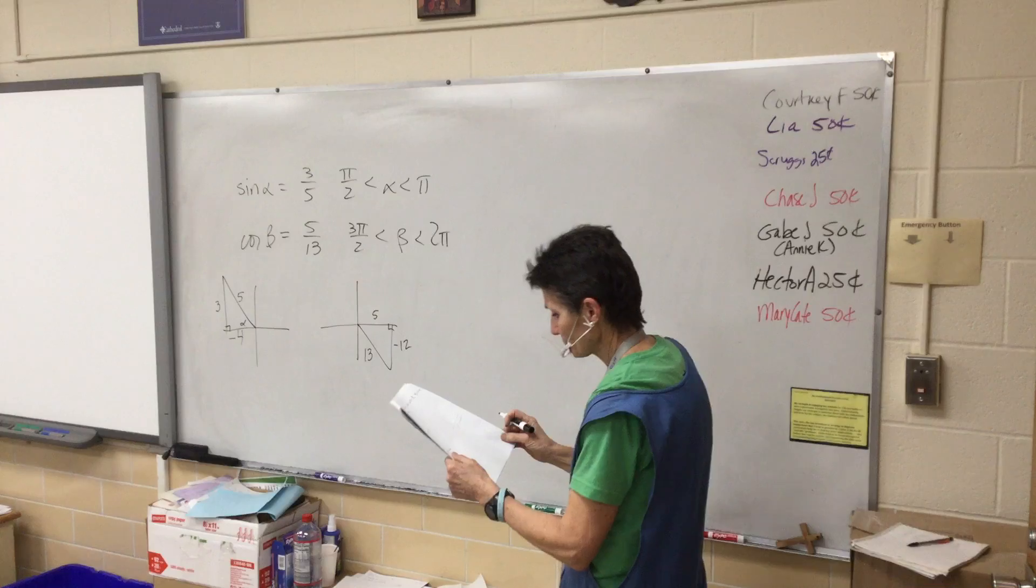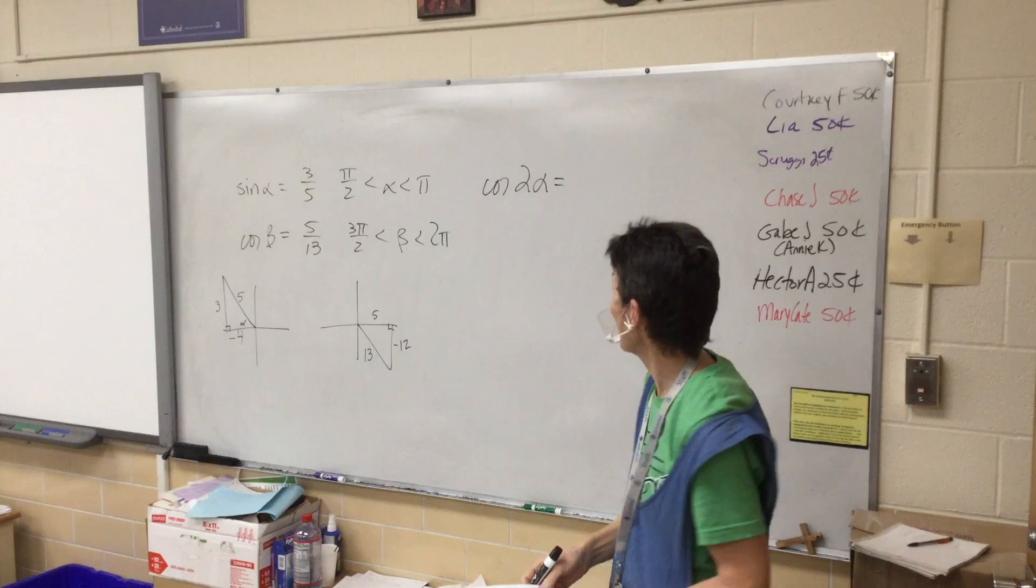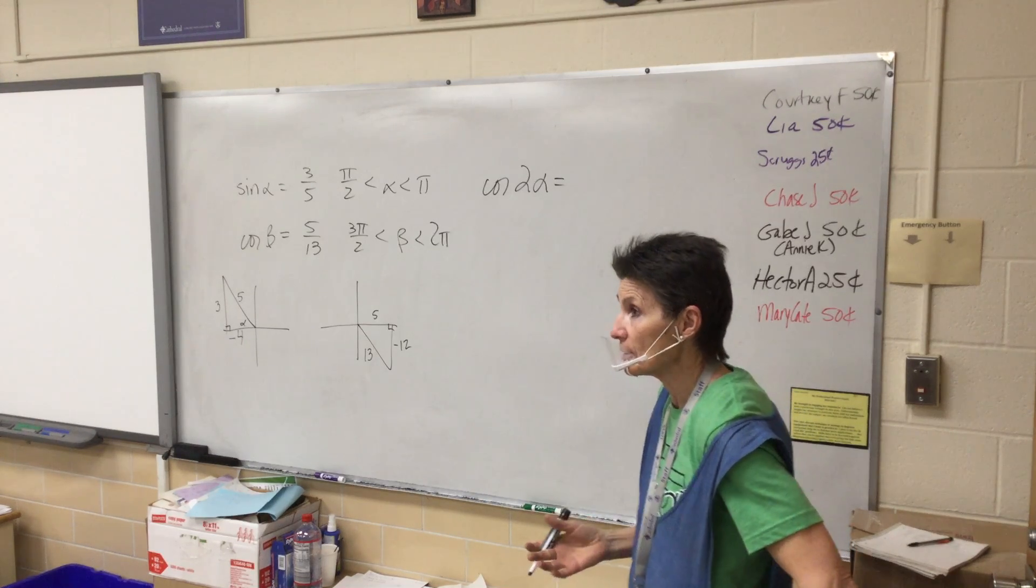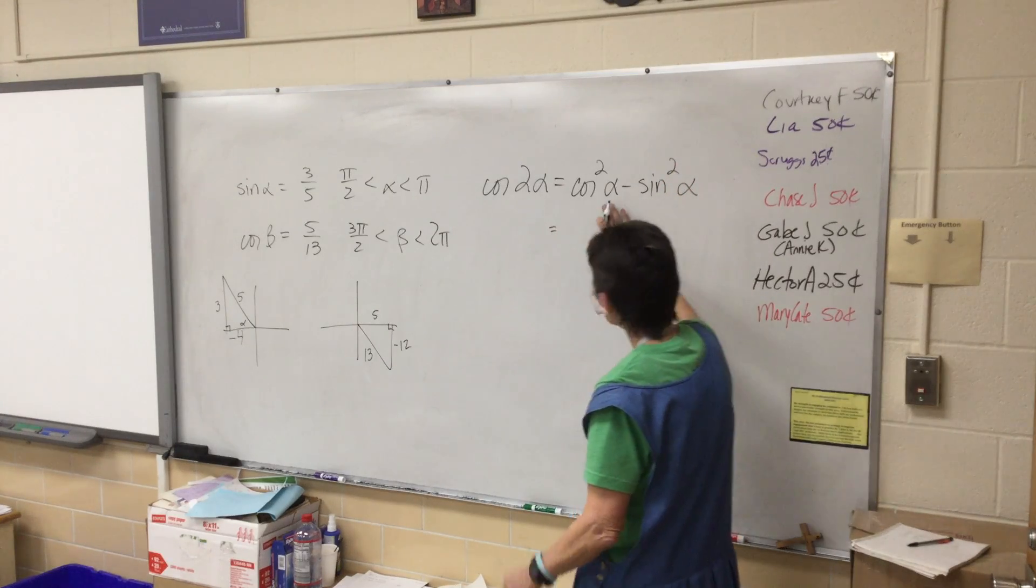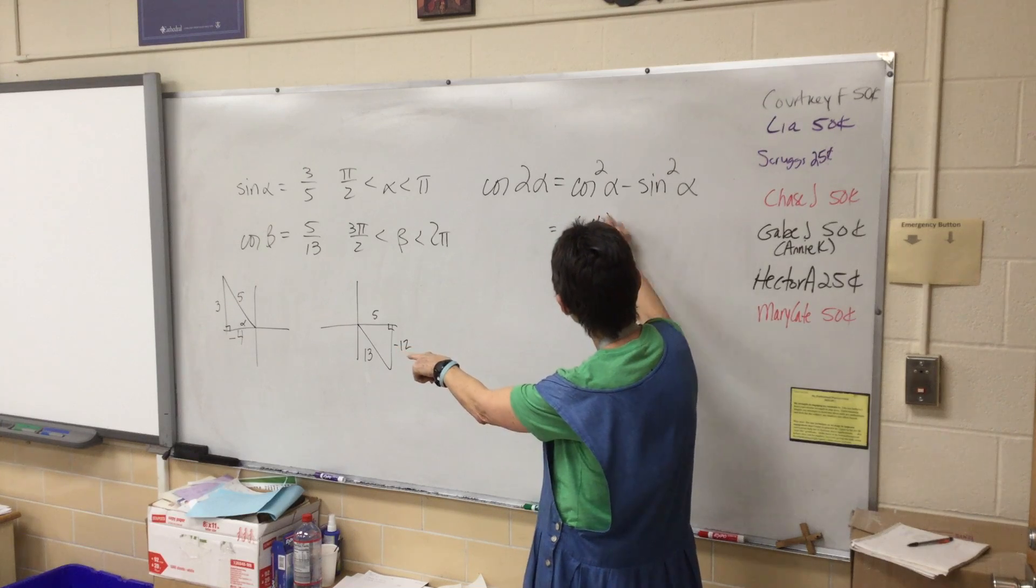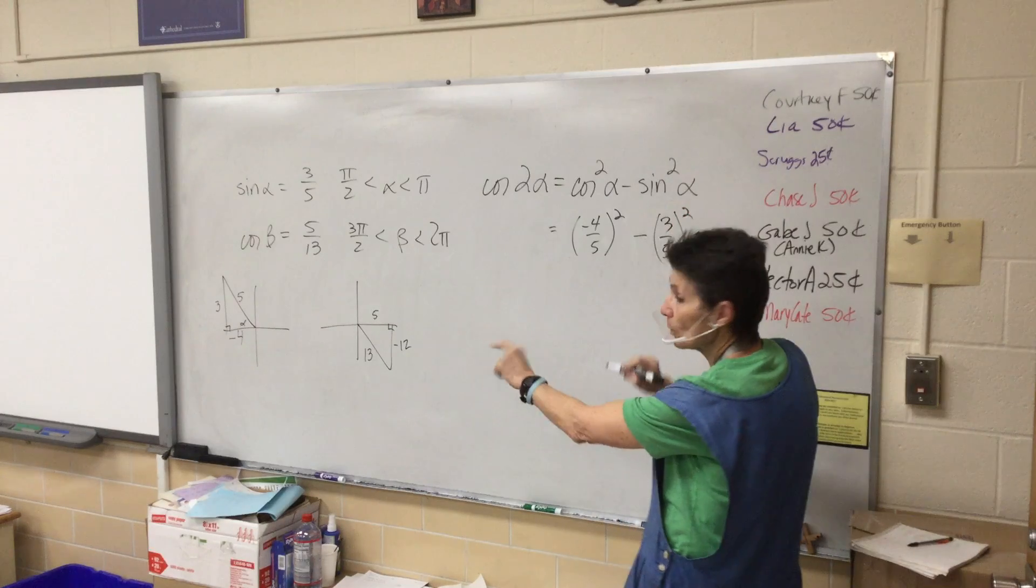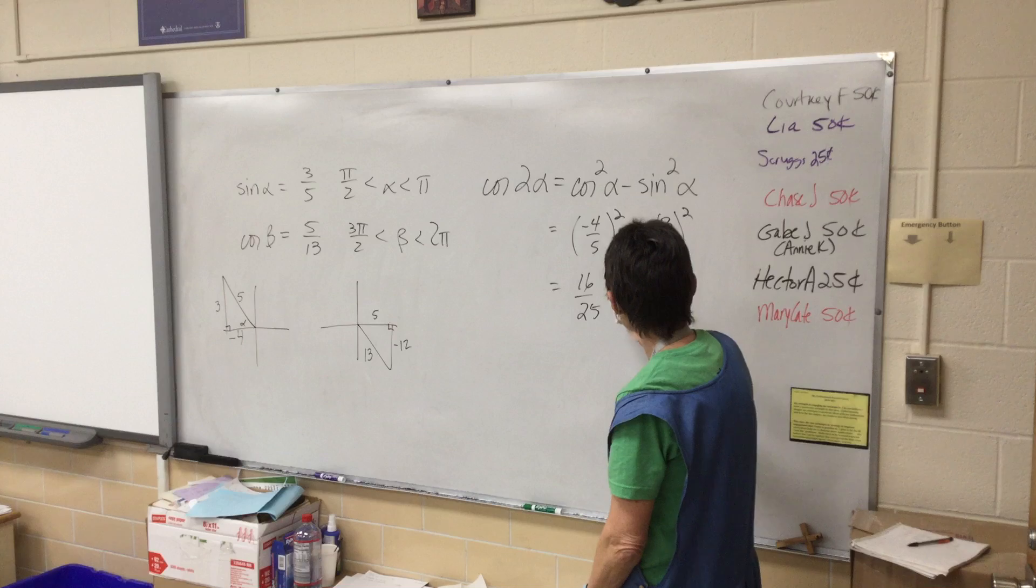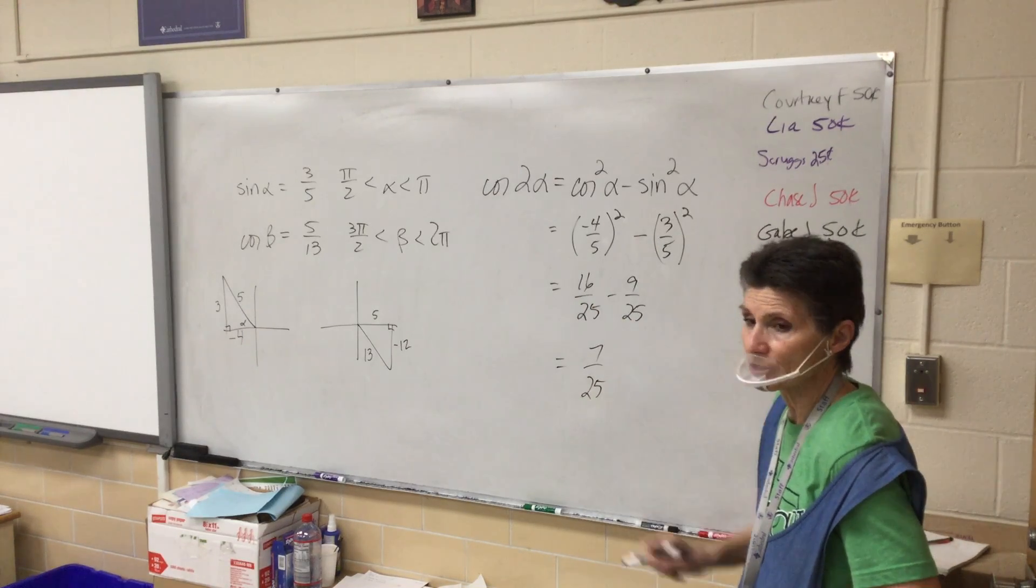I know the cosine is 5 thirteenths. So adjacent over hypotenuse. And then I'll do the Pythagorean theorem again. So 169 minus 25 is 144, so this is negative 12. Now all that's the given, I haven't even started the problem yet. Let's skip down and see cosine 2 theta. So all that's what I'm going to use to find the cosine of 2 alpha. Do I know the cosine of alpha? Negative 4 fifths. And do I know the sine of alpha? 3 fifths. This is easy. So it's 16 25ths minus 9 25ths. So I think the answer is 7 25ths.